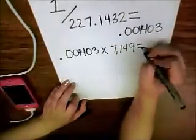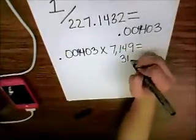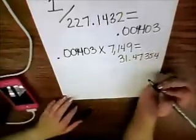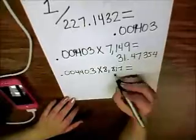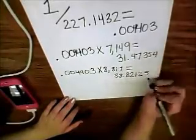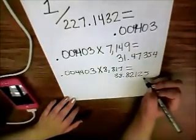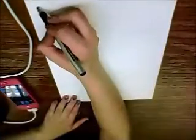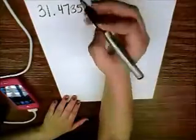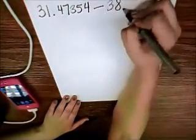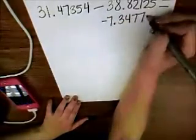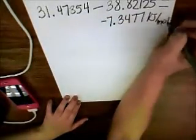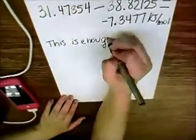I'm going to multiply that times the enthalpies that we found in the products and reactants, and get 31.4754 for the reactants and 38.82125 for the products. And all we have to do now is subtract: 31.47354 minus 38.82125. You want to subtract the products from reactants.